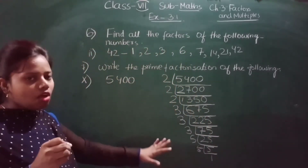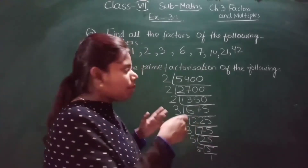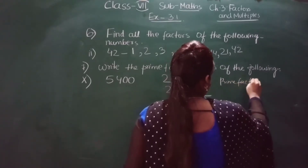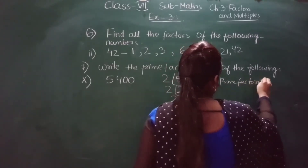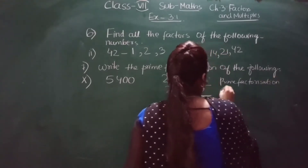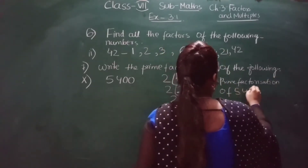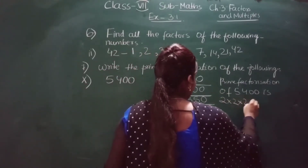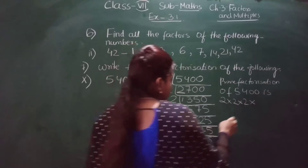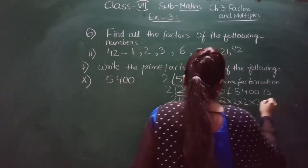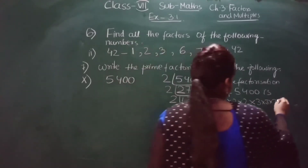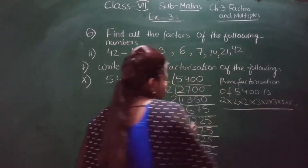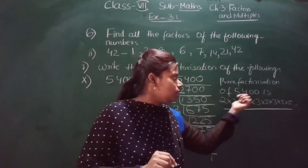Now we write the prime factorization of 5400. There are three 2s: 2 × 2 × 2. There are three 3s: 3 × 3 × 3. There are two 5s: 5 × 5. So the prime factorization of 5400 is 2 × 2 × 2 × 3 × 3 × 3 × 5 × 5. When you multiply all of these together you will get 5400.